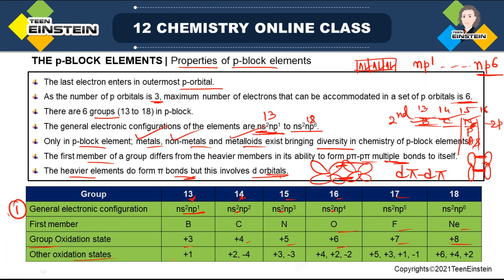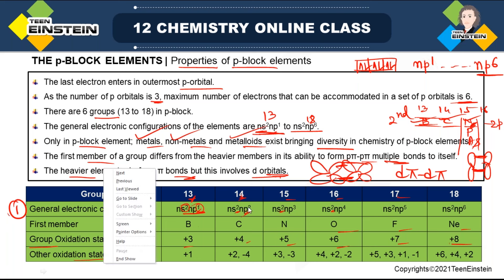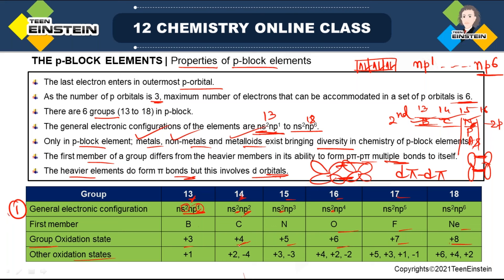Other oxidation states are also possible. For group 13 (ns²np¹), if only the p electron is involved in bonding the oxidation state is +1; if the s electrons are also involved it becomes +3. For group 14 (ns²np²), with two electrons in bonding it is +2 and with all four electrons it is +4, which is the common oxidation state.